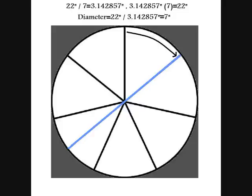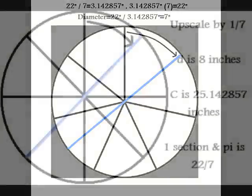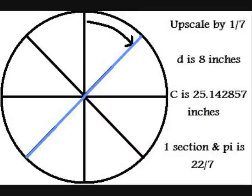Now, it may just seem convenient that 22-sevenths works out this way, but let's upscale it. Let's go to a circle divided into eight parts that has a diameter of eight inches. So, we've upscaled it. The circumference is upscaled, as you can see.